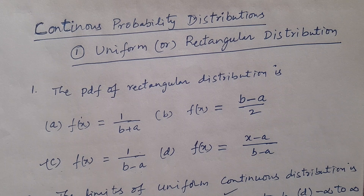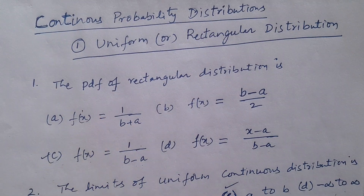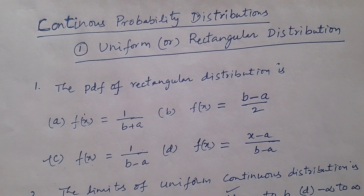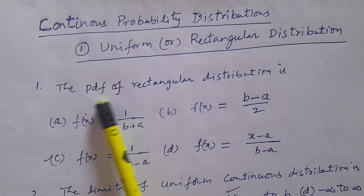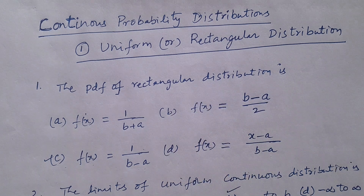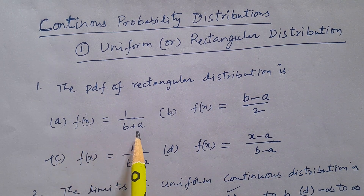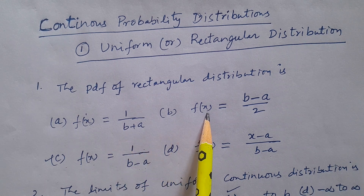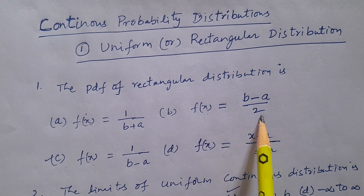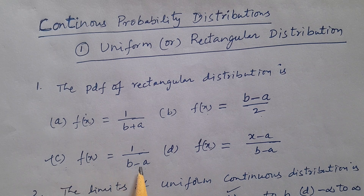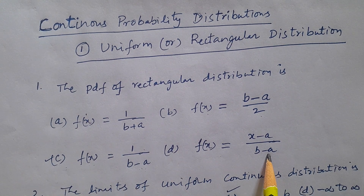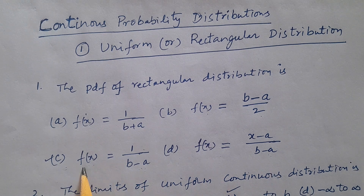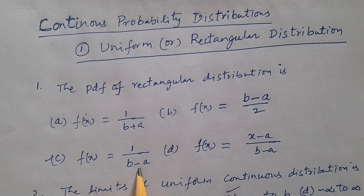Question number 1: The probability density function (PDF) of rectangular distribution is — options: A. f(x) = 1/(b+a), B. f(x) = (b-a)/2, C. f(x) = 1/(b-a), D. f(x) = (x-a)/(b-a). The answer is C: f(x) = 1/(b-a).